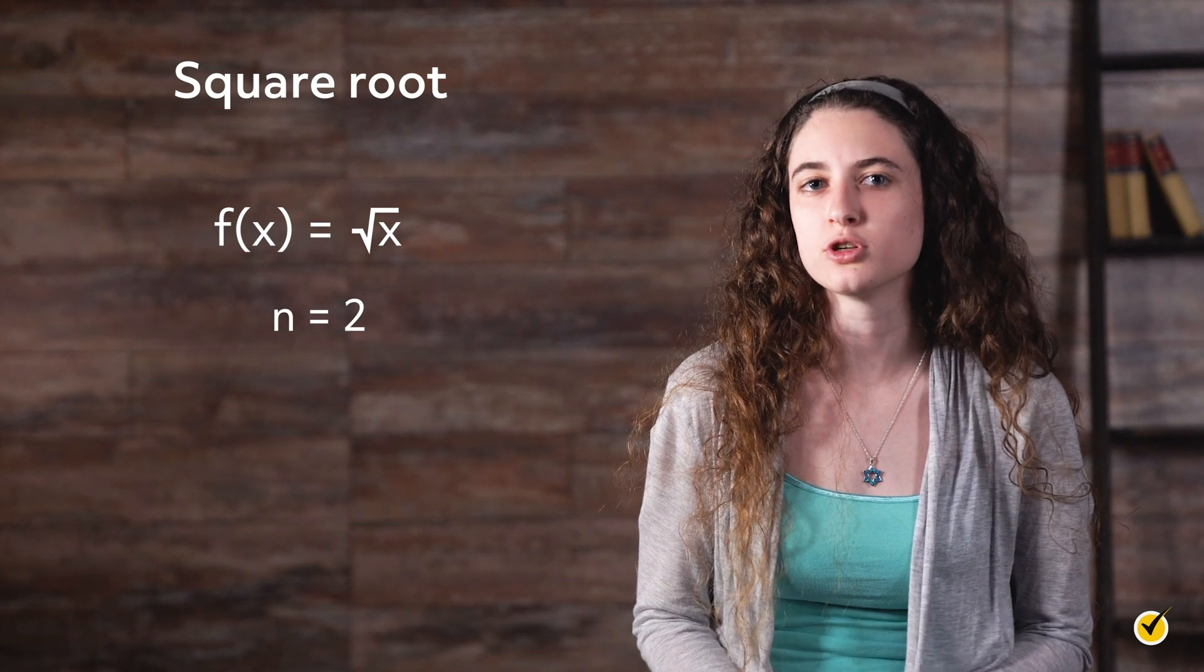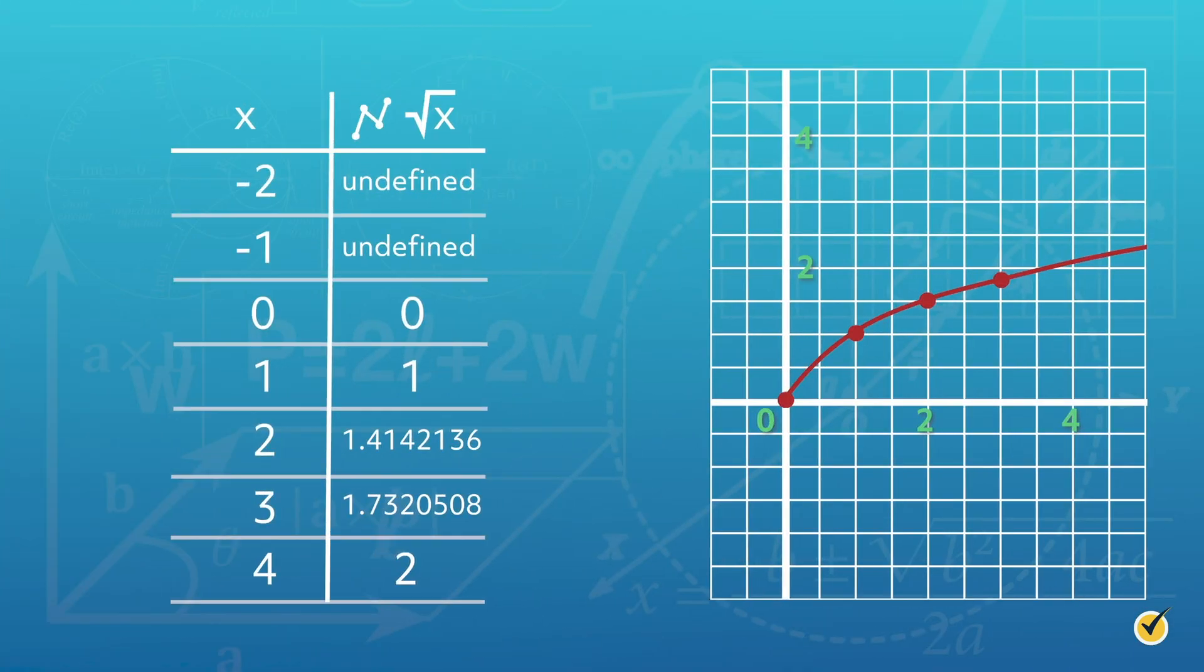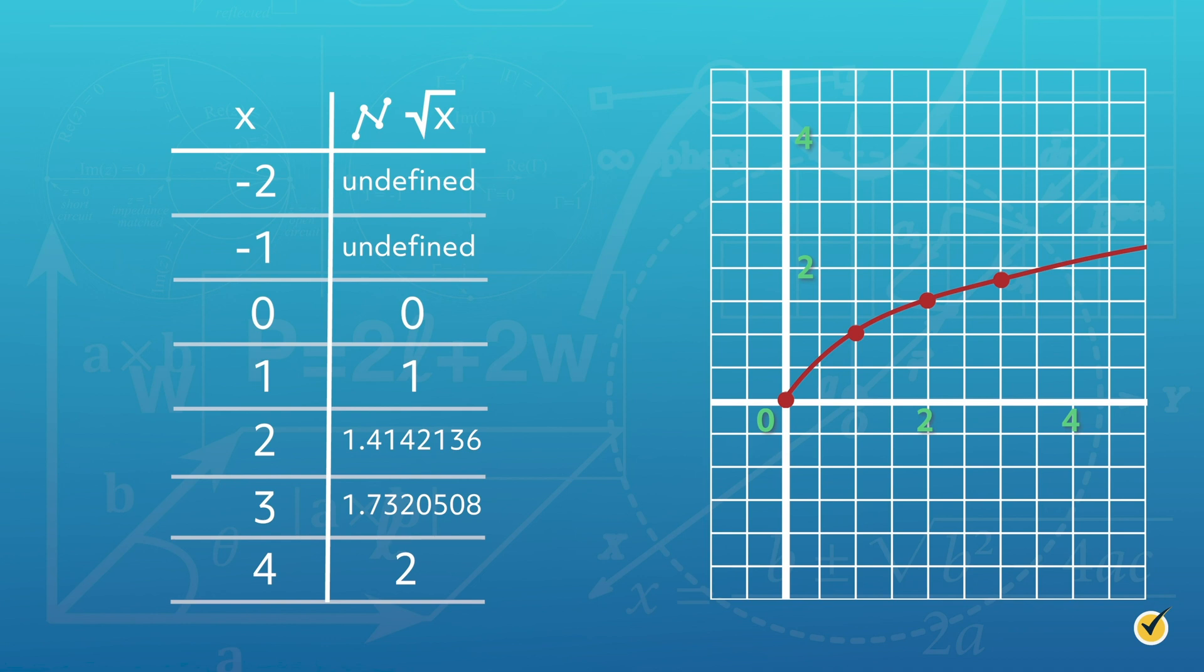Ask yourself, what can I multiply by itself to get the radicand? As you can see in the table in the graph, the square root function has x values restricted from the domain, namely all negative integers, because it is not possible to arrive at a negative value, or radicand, by multiplying a number by itself.